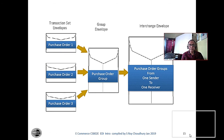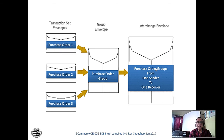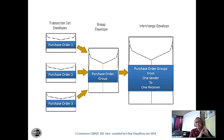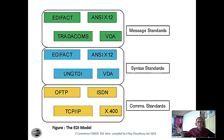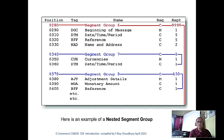EDIFACT is nothing but all the messages put into an interchange envelope — a text envelope. They put messages together and send them. There are some formats for the messages, like EDIFACT and ANSI. It is like an onion-track structure so that you can put your data elements within an envelope, and that envelope passes through the network.